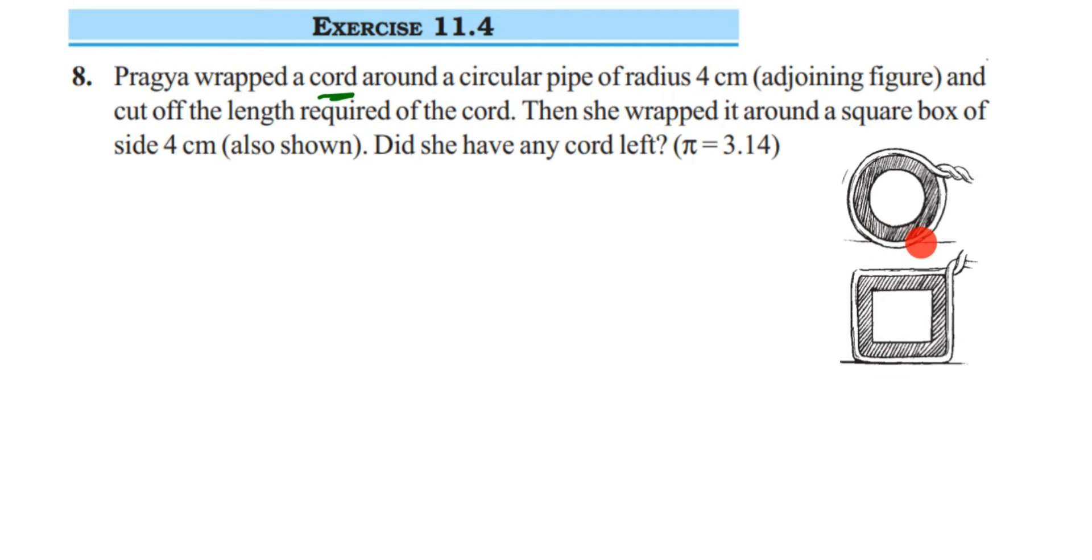So she took a cord, that is nothing but a kind of wire, and she placed it around the circular pipe whose radius is given as 4 centimeters. After wrapping it, she removed the extra piece which she doesn't want - she cut the remaining part.